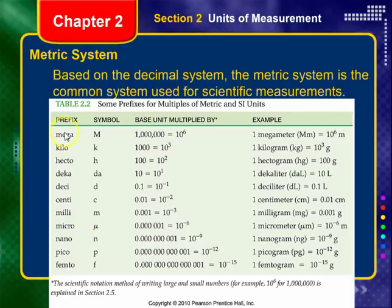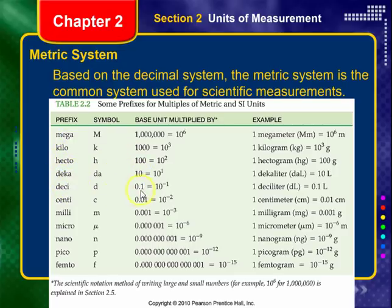These are prefixes — not units — that you put on a unit. Mega means a million. Kilo means a thousand — we'll use kilo a lot. Hecto means a hundred. Deca means ten. Desi means one-tenth. Centi means one-hundredth. Milli means one-thousandth. Micro means one-millionth. Nano means one-billionth. Pico is times ten to the negative 12. Femto — which we probably won't use — is times ten to the negative 15.